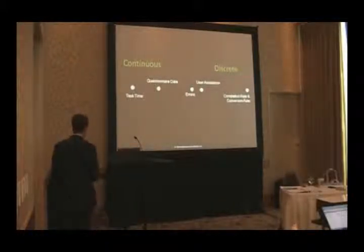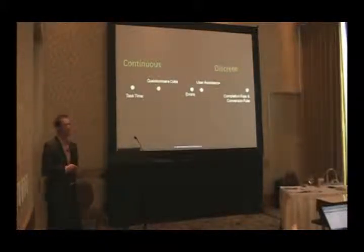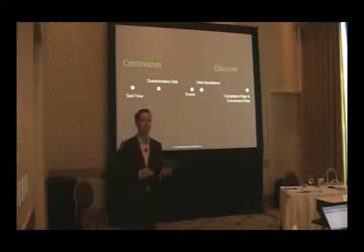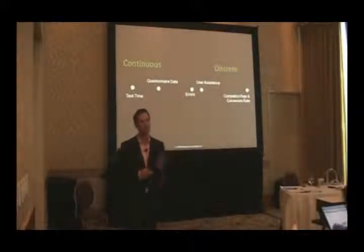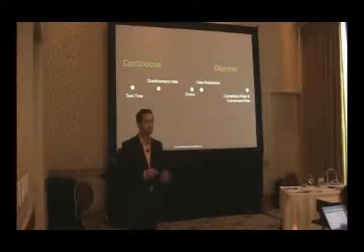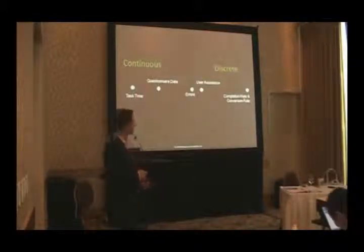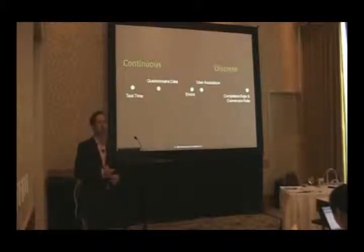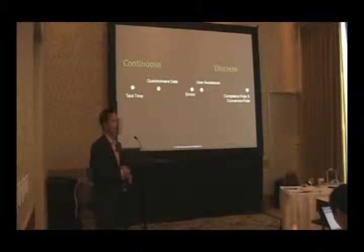Discrete basically means this is where you've got the conversion rates and the completion rates — binary completion rates, binary conversion rates. Did they complete the task? Did they not complete the task? Did they convert? Did they purchase? Did they not? Zeros and ones. We're somewhat limited in what we can do with ones and zeros, and there are more complicated procedures we have to deal with.